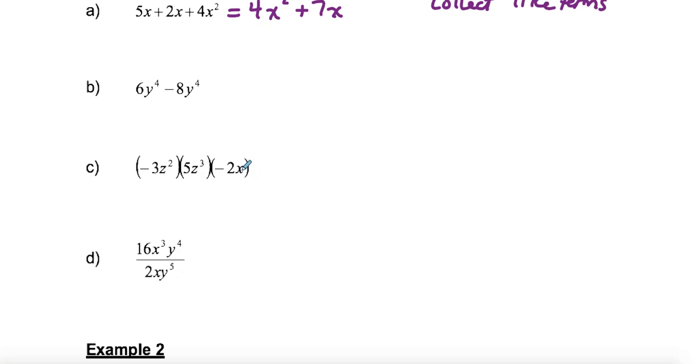The next one, we have two like terms, 6y to the fourth minus 8y to the fourth. Remember, you keep the same variable part and we just subtract our coefficients. So we get negative 2y to the fourth.